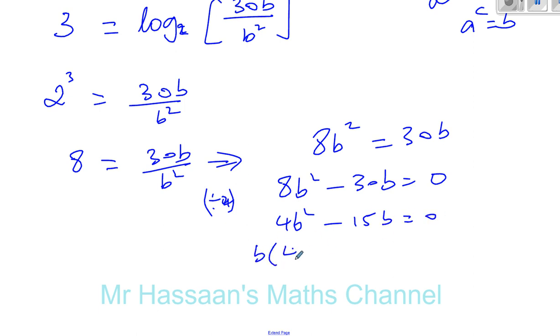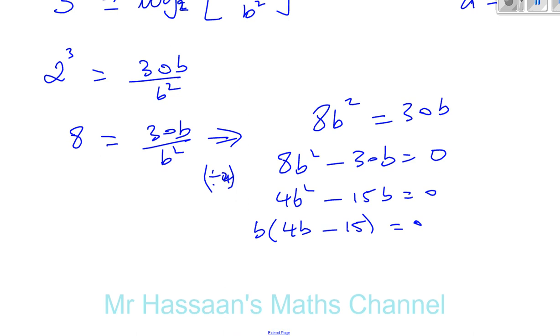So take out the common factor, which is B. I have B times 4B minus 15. So we can equal 0. So either B is equal to 0, or 4B is equal to 15, in which case B is equal to 15 over 4.